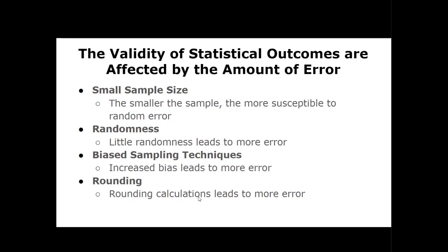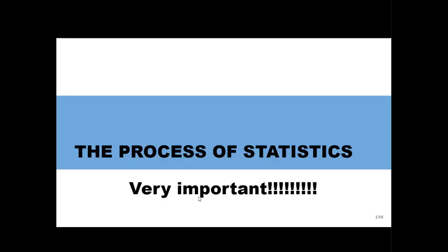If you have a small sample size, you're going to have a lot of error — the smaller the sample size, the more susceptible something is to random error. You also want to make things as random as possible; if things are purposefully chosen, you'll lead to more error. You want to make sure you're choosing the right sampling techniques. Finally, when doing calculations, rounding over and over accumulates error that affects the final inference of the outcome.